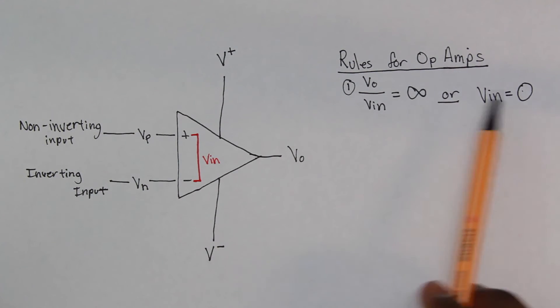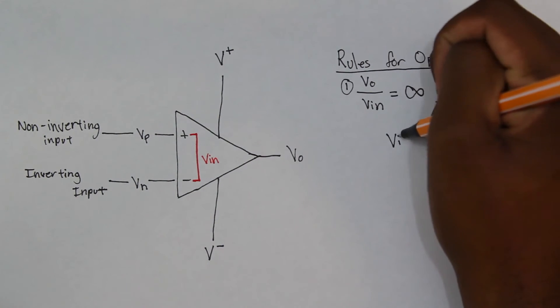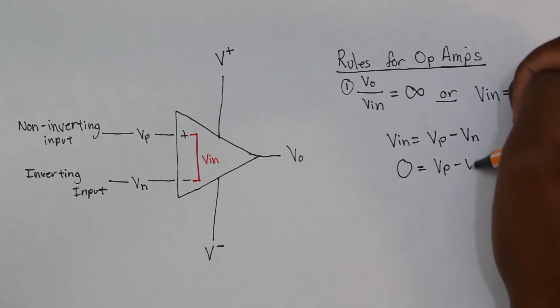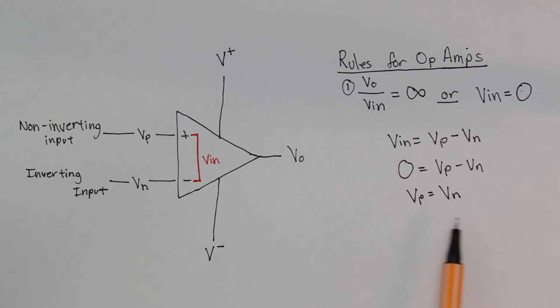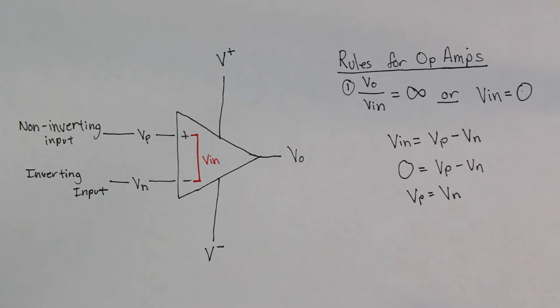Now, there's a few rules for op-amps that we need to sort of learn. The first is that Vout, or Vo, over Vin is equal to infinity. Now, this is the same thing as saying Vin is equal to zero. Now, what does that mean? That means Vin is defined as Vp minus Vn. So if zero is equal to Vp minus Vn, then Vp is supposed to be equal to Vn. Now, that means that it's trying, the op-amp is always trying to keep Vp and Vn equal to each other. So these two inputs, the non-inverting input and the inverting input, are always meant to be around the same value. That's the job of the op-amp, to try and keep them around the same value.